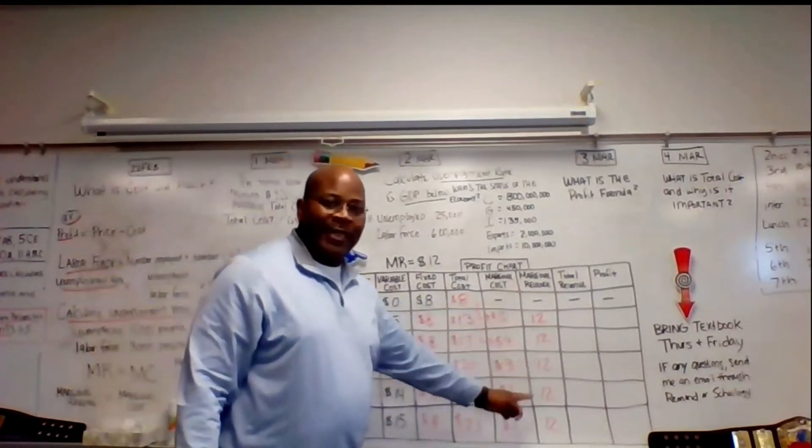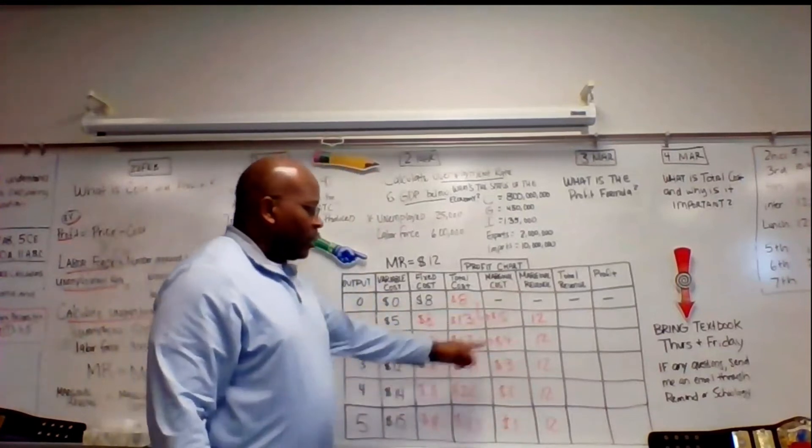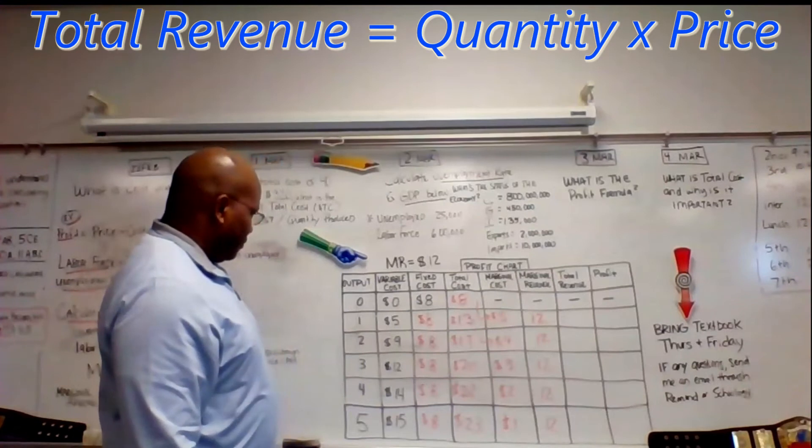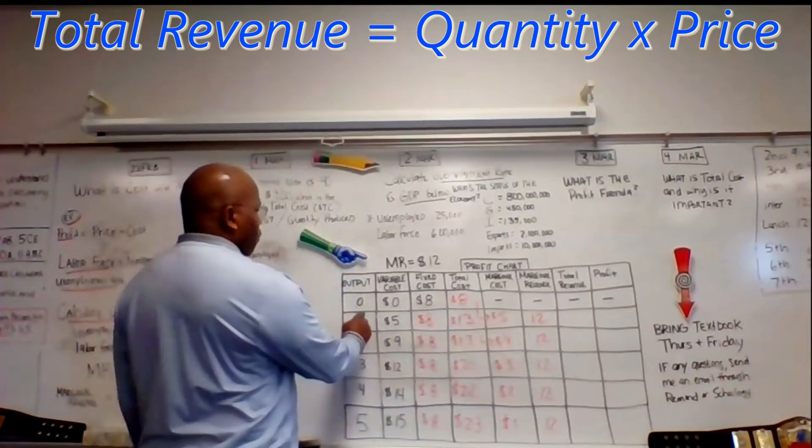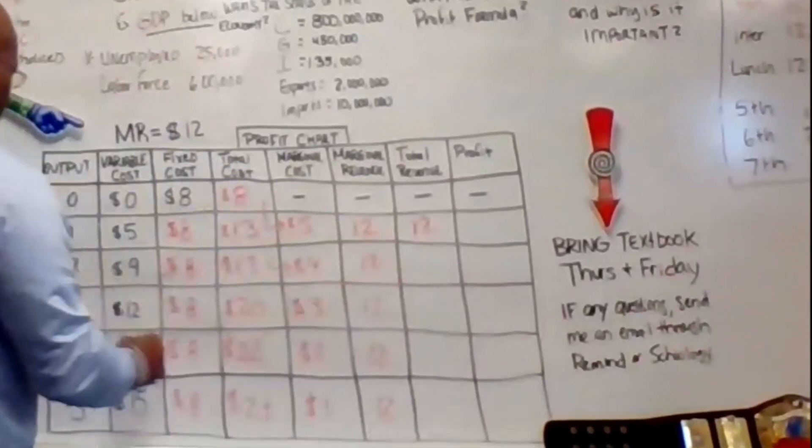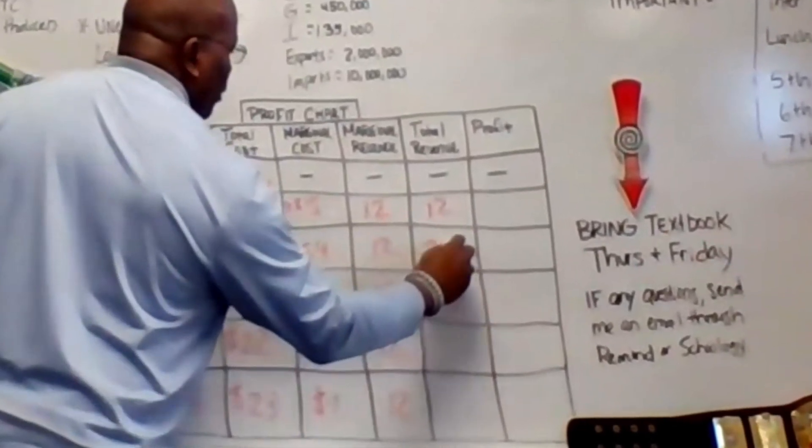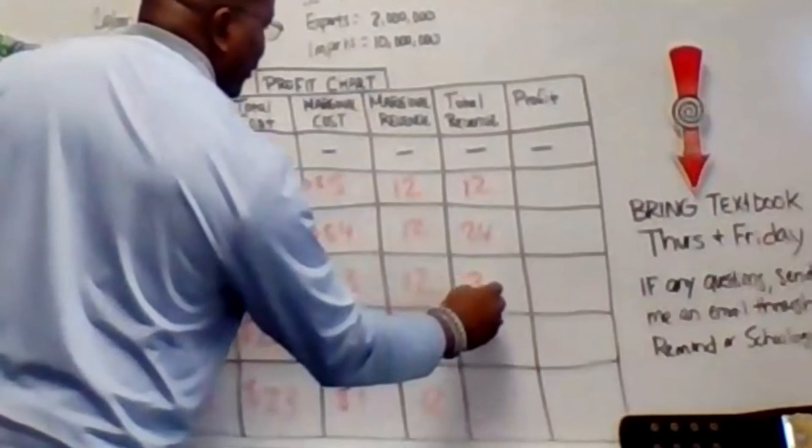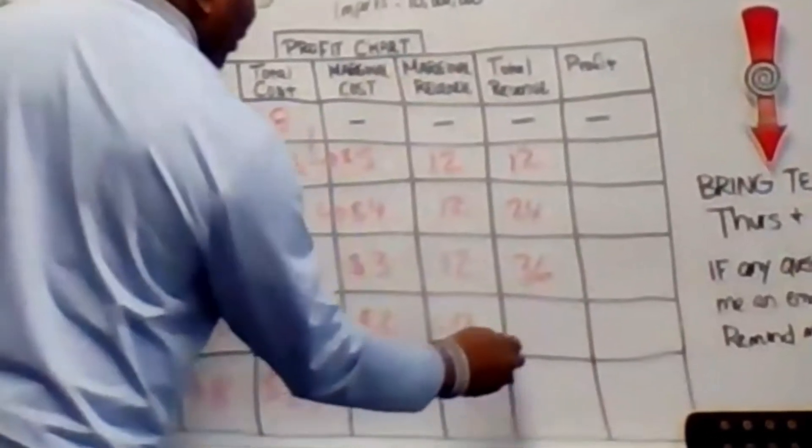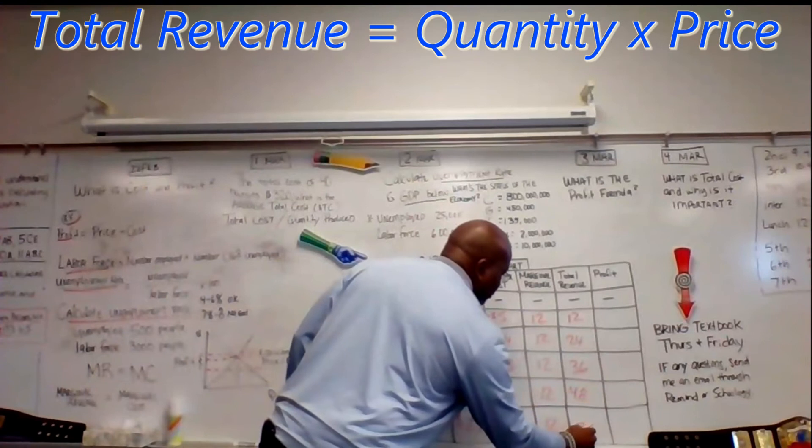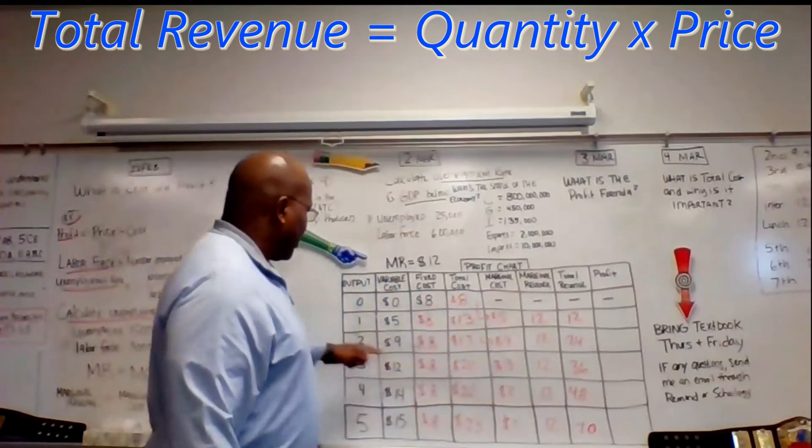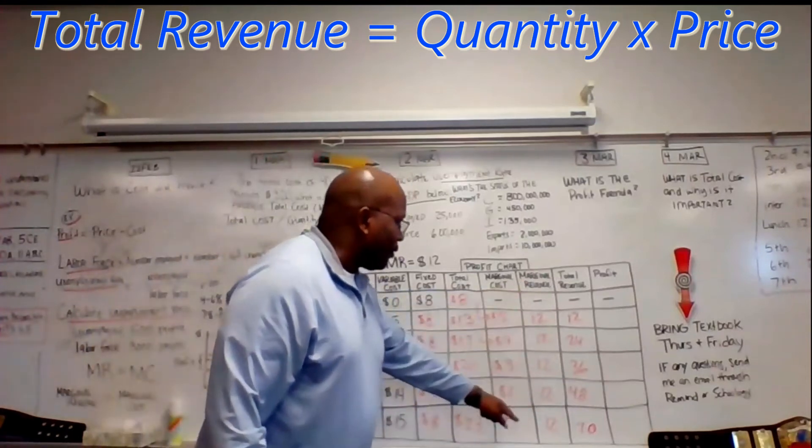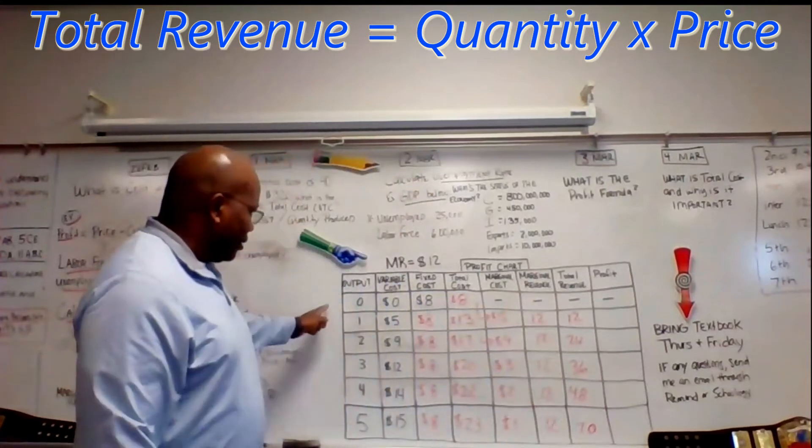Now, marginal revenue, like I said, was a given. It goes all the way down. Now, total revenue would be the output times that marginal revenue. 1 times 12 is 12. 2 times 12 is 24. 3 times 12 is 36. 4 times 12 is 48. 5 times 12 is 60. Again, total revenue is the output times the marginal revenue. That's your total revenue for each unit of output.